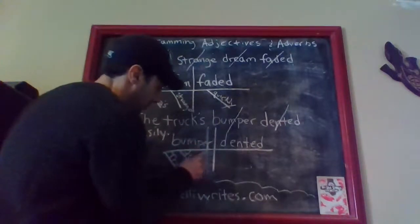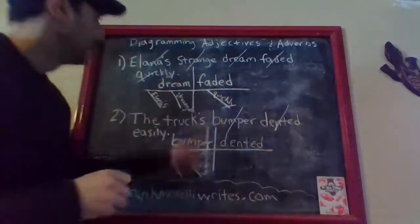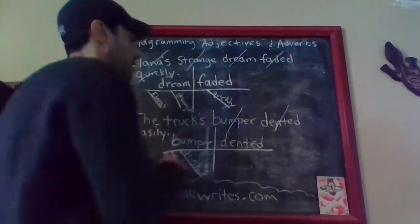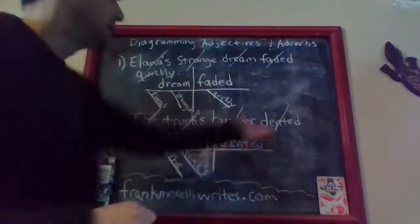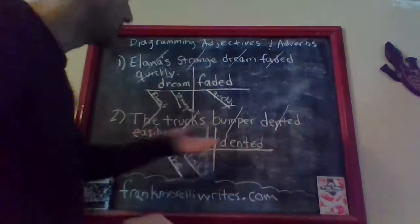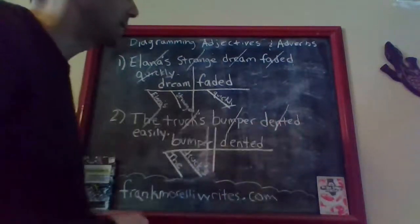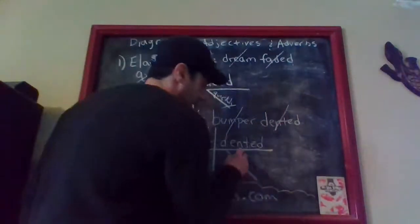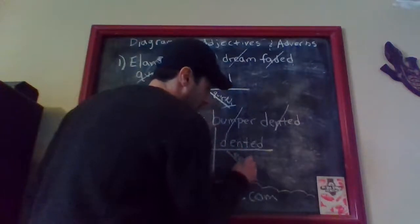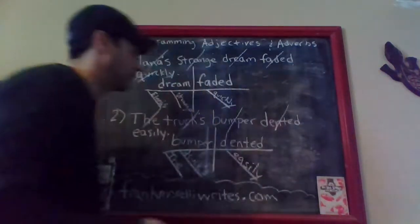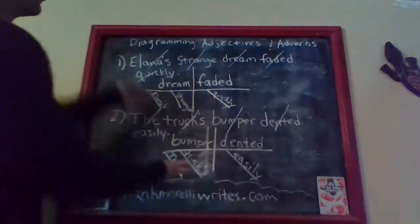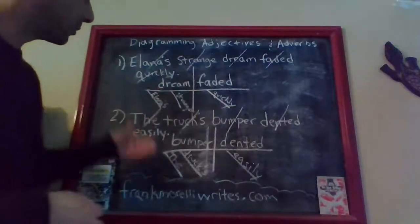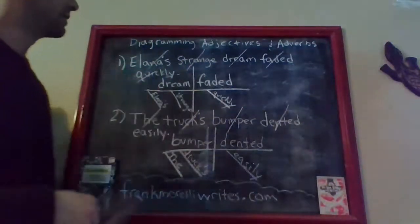Here you see the word 'truck's' — make sure you include the apostrophe showing that it is a possessive word. Now we have one word left, the word 'easily,' and we can see that it is connected — it is giving us more information about the word 'dented.' How was it dented? Easily. So we connect this adverb in the same way that you would put an adjective on the diagram. And there you have it. You can see that both of these diagrams look pretty similar; the sentence structures are pretty much the same, so you're going to have diagrams that look a lot like each other.